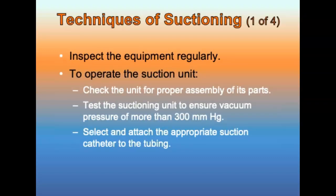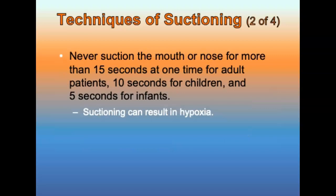Techniques for suctioning: inspect your suction equipment regularly. Steps include checking the unit for proper assembly, turning on the unit and testing for a vacuum pressure of more than 300 mmHg, and selecting and attaching the appropriate catheter to the tubing. Never suction the mouth or nose for more than 15 seconds at a time for adults, 10 seconds for children, and 5 seconds for infants. Suctioning can result in hypoxia. Rinse the catheter and tubing with water to prevent clogging, and repeat suctioning only after the patient has been adequately ventilated and reoxygenated.